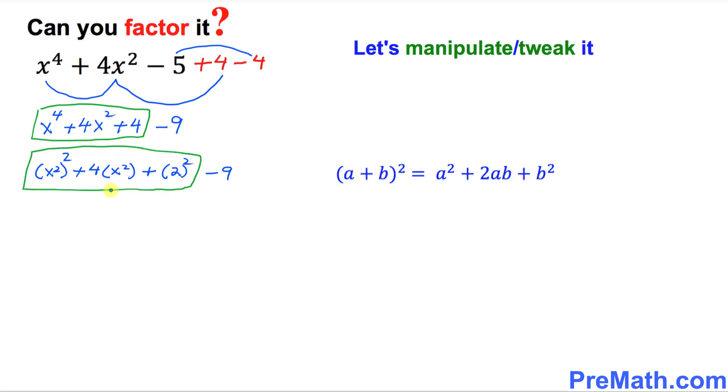And now we are going to compare this with our well-known formula. a plus b squared equals to a squared plus 2 times a b plus b squared. If you look at this and compare, I can certainly write this part inside this box as x square plus 2 complete square. And obviously we got minus 9 over here.